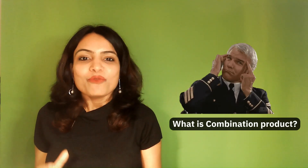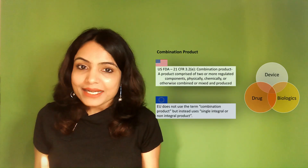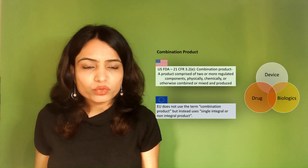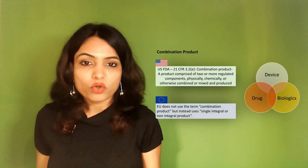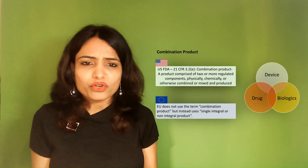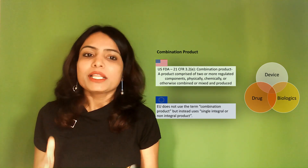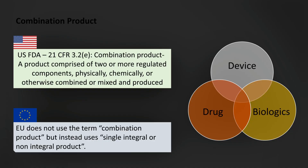When drugs, biologics, and devices — any two or more of these components — are combined together, they are called combination products. In the US, the definition is defined under 21 CFR Part 3. But in the EU there is no term called 'combination product' — that's true. From a terminology point of view there is a difference: in the EU these products are called integral or non-integral products, and are generally referred to as drug-device combination products, or DDC.